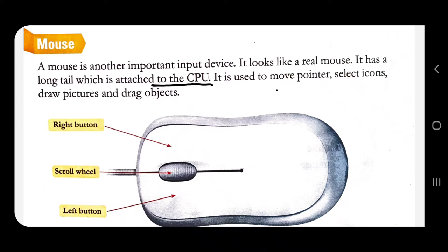The cable — the long tail of the mouse — gets attached to the CPU, and then the mouse works. It is used to move the pointer, select icons, draw pictures, and drag objects. To move the pointer on your screen, you always see an arrow — that is the pointer. To select icons, the small pictures on the laptop like the recycle bin, you use the mouse.